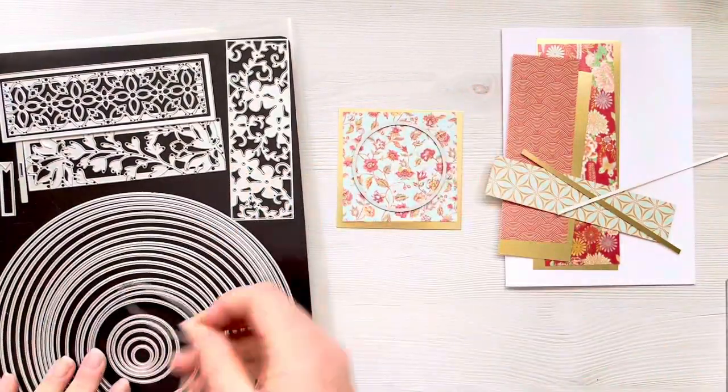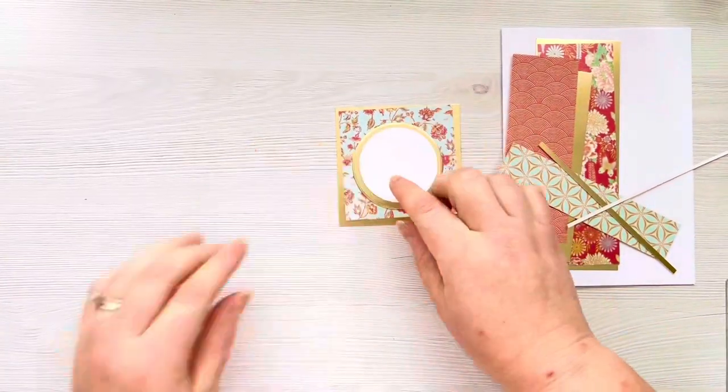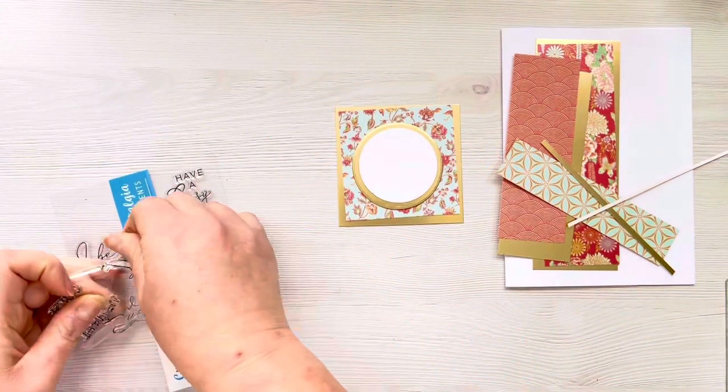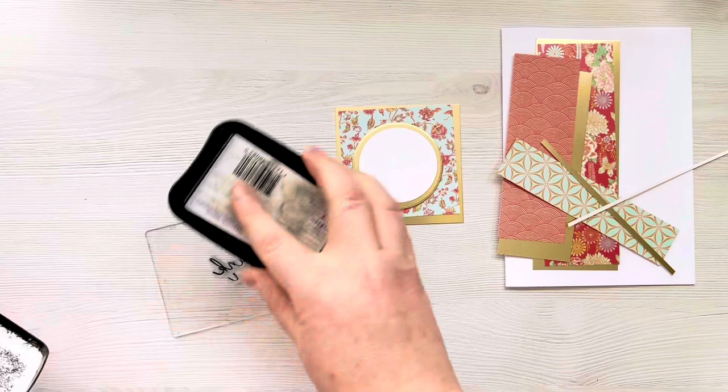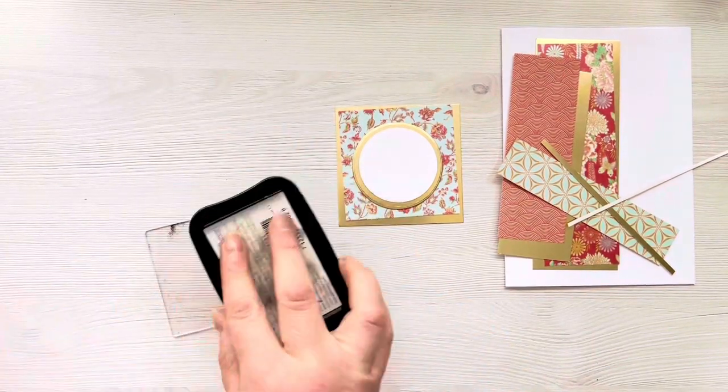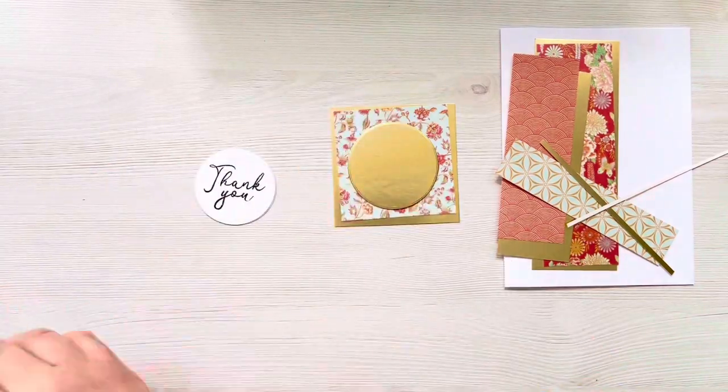I'm then just working out what size circles to use. This is the Creative Craft Products Nesting Circles die set and it fits this thank you sentiment perfectly. So I've gone ahead and die-cut those already and I'm just going to ink this up now with VersaFine Onyx Black ink and stamp that down on the circle.